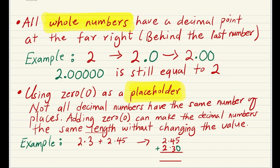So 5 plus 0 is 5, 4 plus 3 is 7. Don't forget to always bring down the decimal point, and then 2 plus 2 is 4. So for the question of 2.3 plus 2.45, our answer is 4.75.